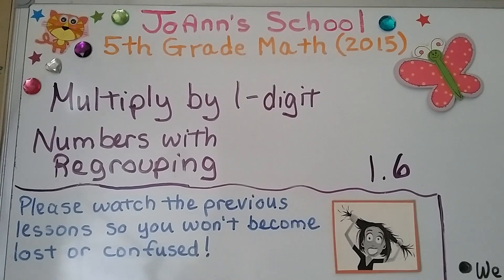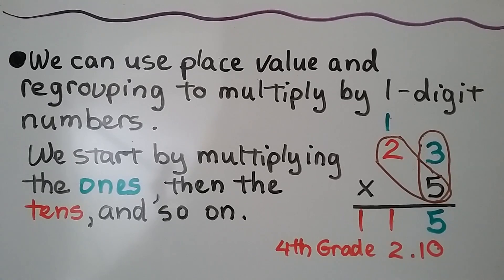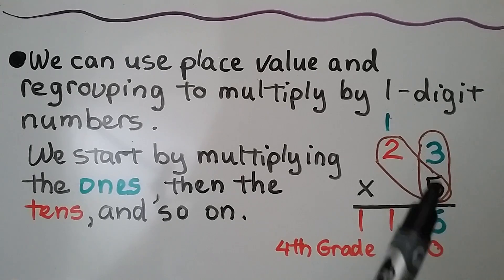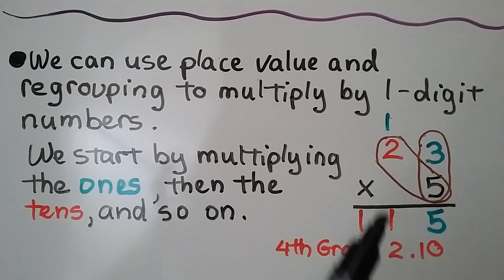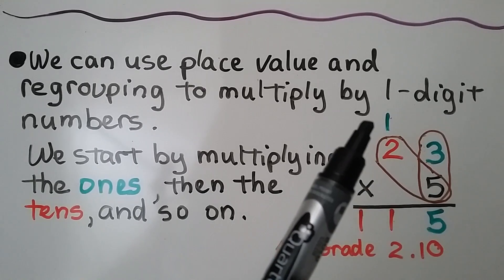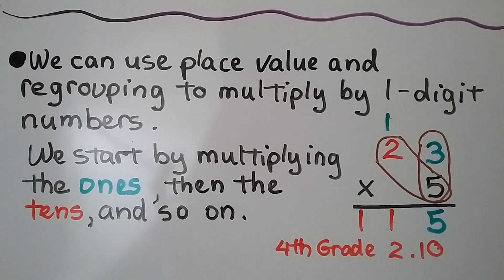Lesson 1.6: Multiply by one-digit numbers with regrouping. We can use place value and regrouping to multiply by one-digit numbers. We start by multiplying the ones, then the tens, and so on. We add the regrouped amount.